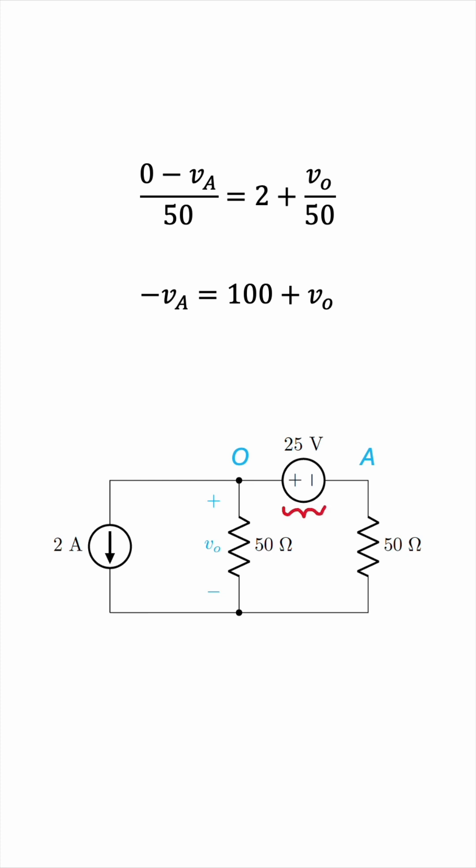Notice that there is this voltage source which is the only element between nodes O and A. In other words, node O must be at a higher potential than node A, and this difference in potential is precisely the 25 volts of the source. So vo is 25 plus va, and this gives us the second equation we need to solve for vo.